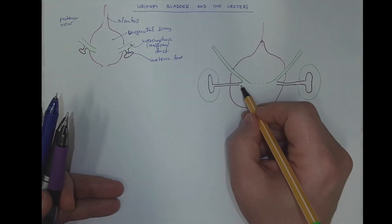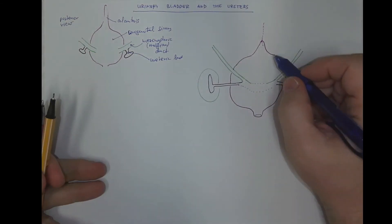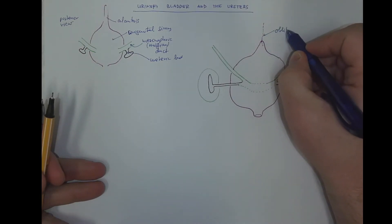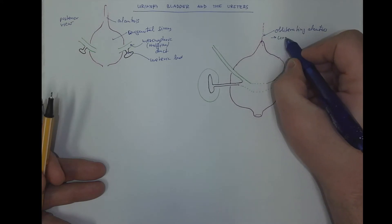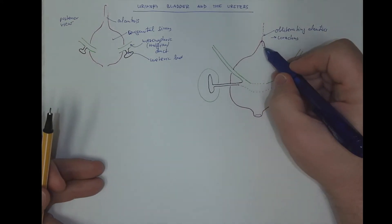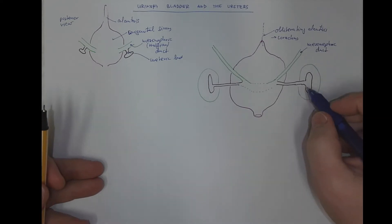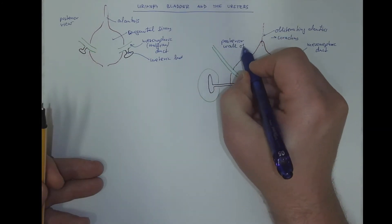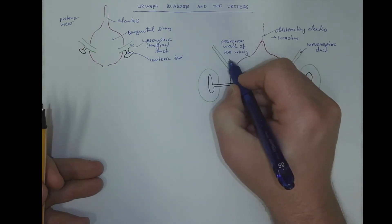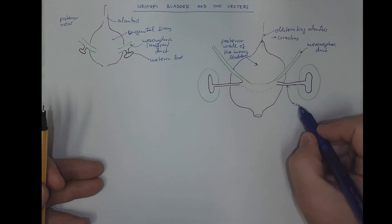So this whole part will become incorporated into the dorsal wall of the bladder. This is the obliterating allantois. It will become a structure called the urachus that will connect the apex of the bladder with the umbilicus. This is the mesonephric duct. This is the posterior wall of the urinary bladder. This is the ureter.